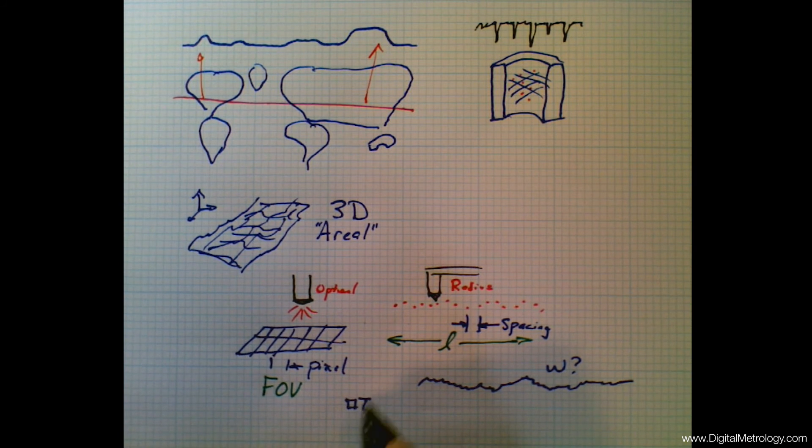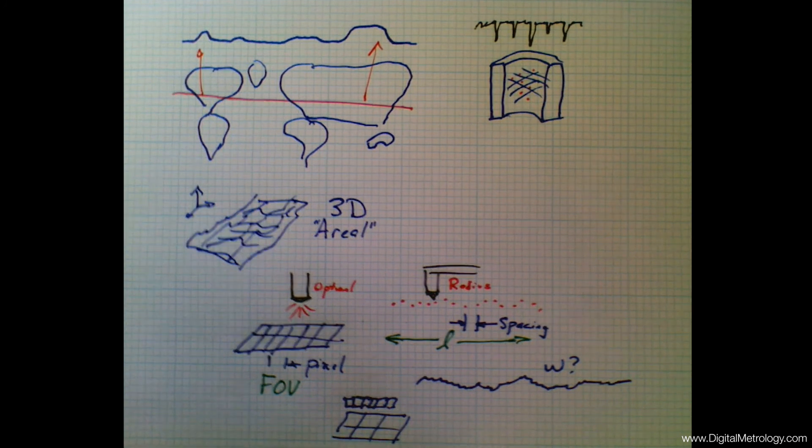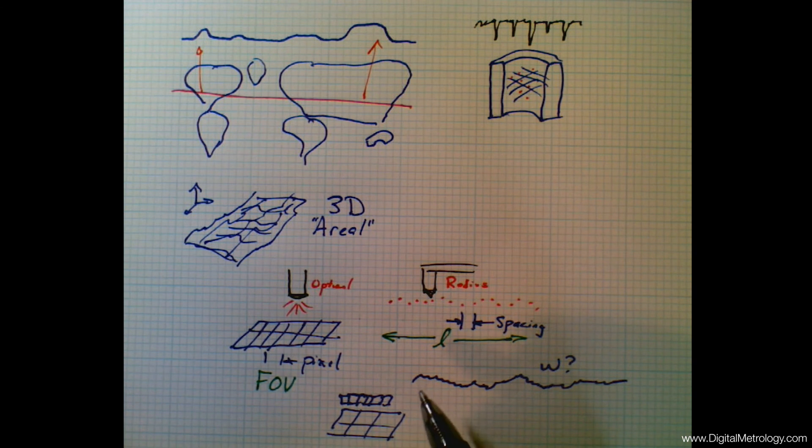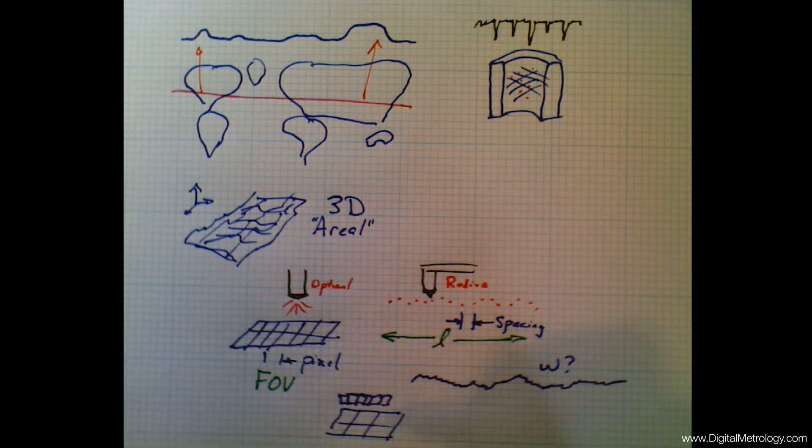We may have to stitch together several images in order to get waviness, or we would have to take one large image at lower resolution to get waviness. So optical and 3D measurement, or aerial measurement, as it's technically called, is a very powerful tool. It can be related back and forth to our stylus, and it could enhance your ability to understand your surfaces. So there's a place for both.